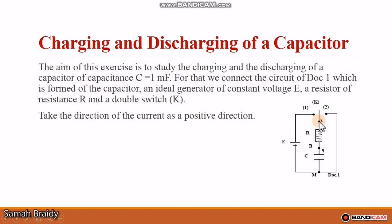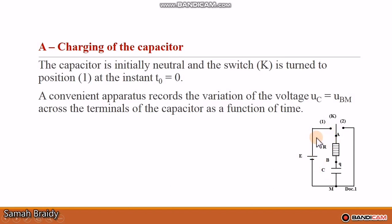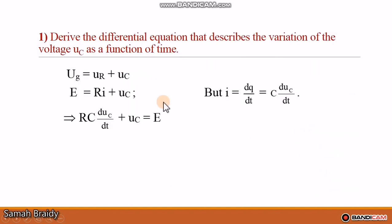Part A: charging of the capacitor. The capacitor is initially neutral and the switch K is turned to position 1 at instant T₀ equal to 0. A convenient apparatus records the variation of the voltage UC = UBM across the terminals of the capacitor as a function of time. With the switch at position 1, we consider only this part of the circuit. Part 1: derive the differential equation describing the variation of UC as a function of time.